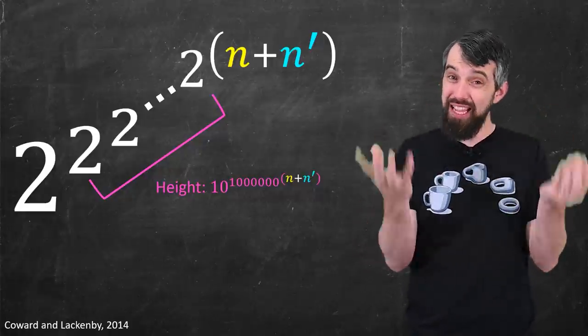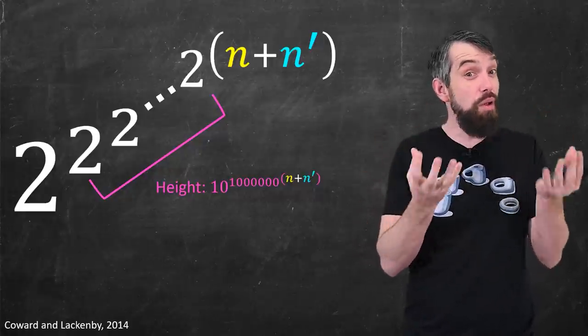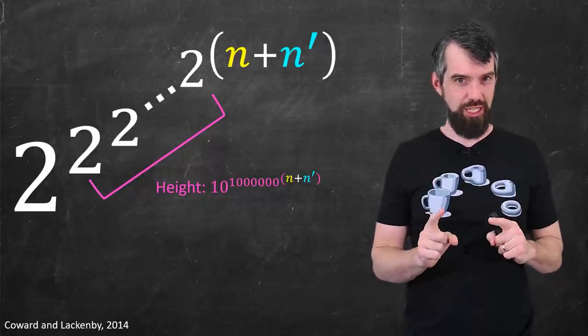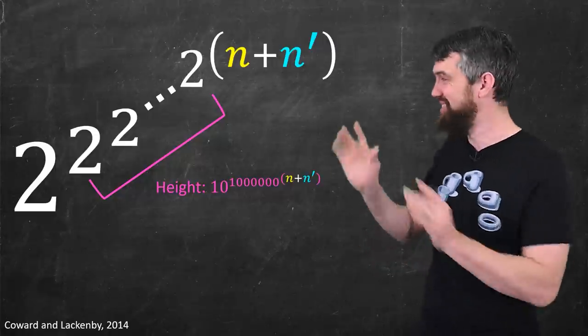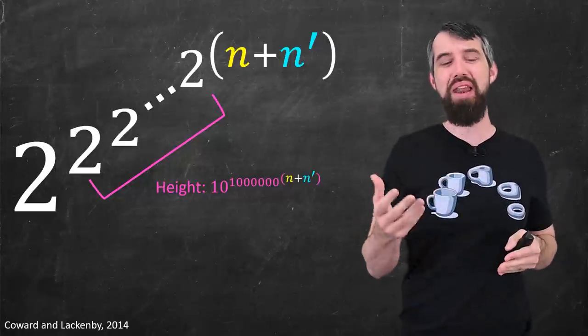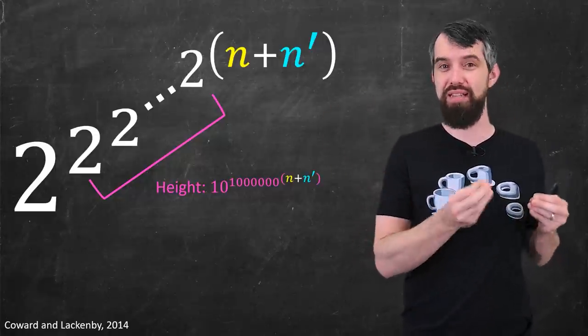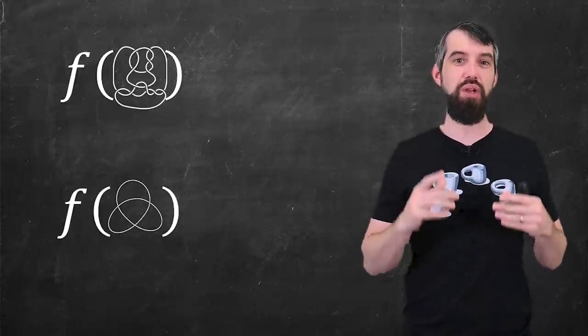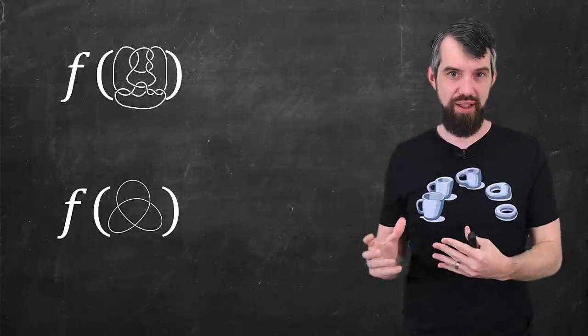So the problem of taking two knots and deciding whether they're the same or whether they're different is not yet solved just because Reidemeister moves exist and they have an upper bound on how many Reidemeister moves you might have to test for. So instead, I want to introduce something called a knot invariant.